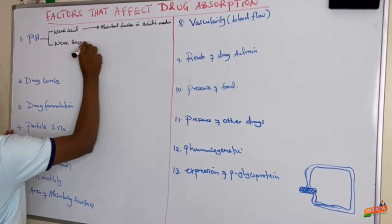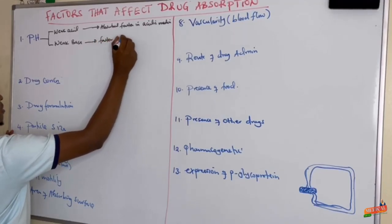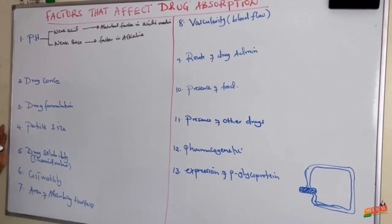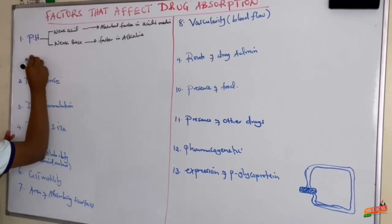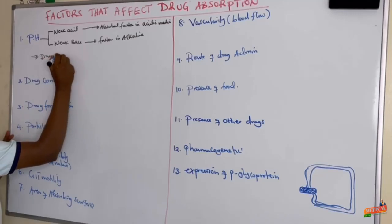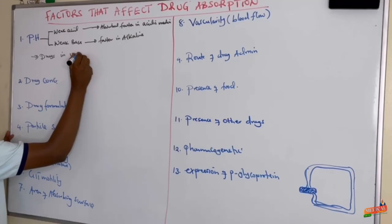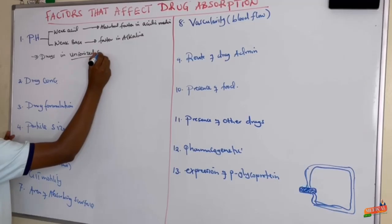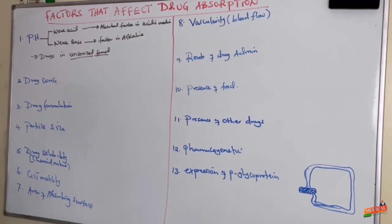Whereas drugs which are weakly basic are also absorbed faster in alkaline medium. Because drugs are absorbed in a unionized form — so when drugs are in a unionized form, that's when they can cross the phospholipid bilayer.